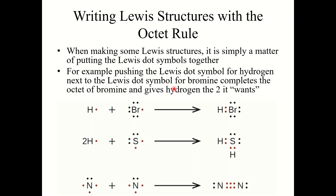Let's continue with the second half of section 4.4, looking at writing Lewis structures with the octet rule. When you make some Lewis structures it is simply a matter of just putting the Lewis dot symbols together — some of them just snap together very neatly. For example, hydrogen and bromine: place the hydrogen atom on the side to form a single bond with bromine, giving hydrogen two electrons and completing the octet for bromine. Similarly for H₂S, place each hydrogen on one side to give each hydrogen two and sulfur eight. For nitrogen gas, the two nitrogen atoms both need three more, so the three lone electrons pair up to form a triple bond.